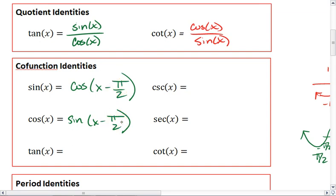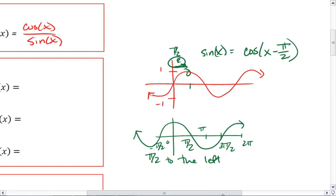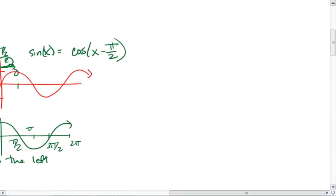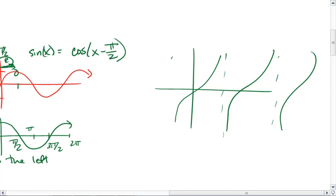Okay. We find then that tangent, which looks like this, we can express this graph as a cotangent graph if we were to reflect and shift. So first we want to reflect,